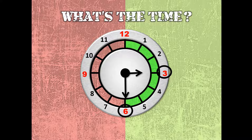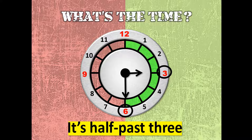Next, what's the time? Teacher A told you: if the long hand strikes at number 6, you call it 'half past.' And the short hand strikes at number 3, you will say: it's half past three. Half past three.